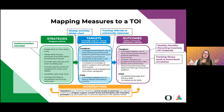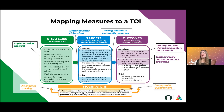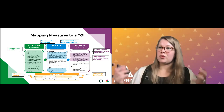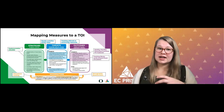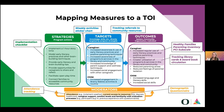Taking a look at this, you can see how it maps practically — for instance, making an implementation checklist and tracking referrals from community resources. Importantly, once you have your outcomes, you can connect to the impact website and identify precisely the right measures. For example, the Healthy Families Parenting Inventory PCI subscales might be the best measures here. We went through the process, identified what we're trying to measure, and can now precisely identify the right measure to use.